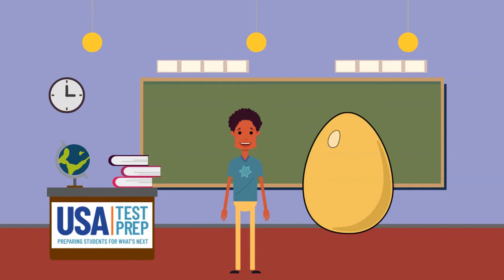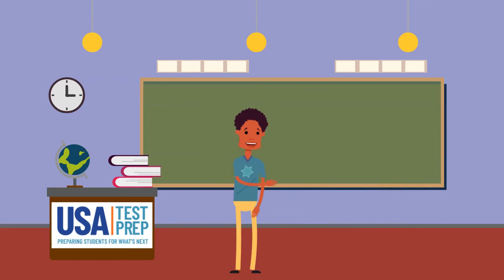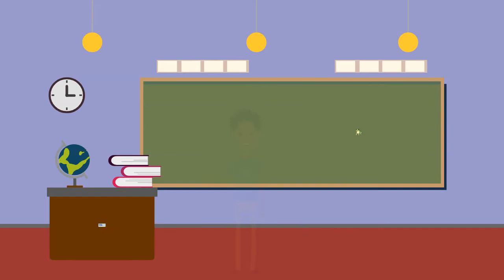Say it out loud. There are many examples of animals that are born inside an egg. Birds, snakes, alligators, and fish are just a few examples. Another animal that is born inside an egg is a frog.